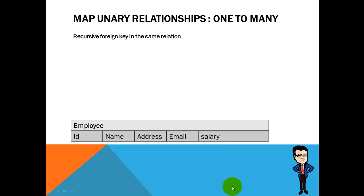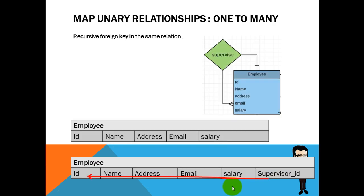Now map unary one-to-many relationships. These types are found mostly in recursive or self-relationships. For example, one employee — acting as a manager — can supervise many employees. So we add a field 'supervisor ID' as a foreign key to the employee table, which refers to the primary key 'employee ID'.